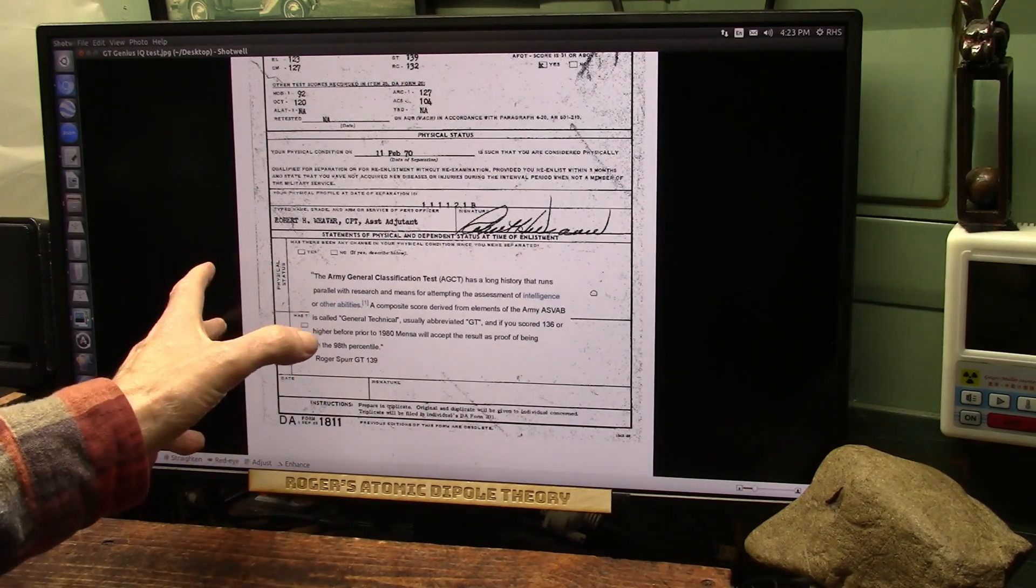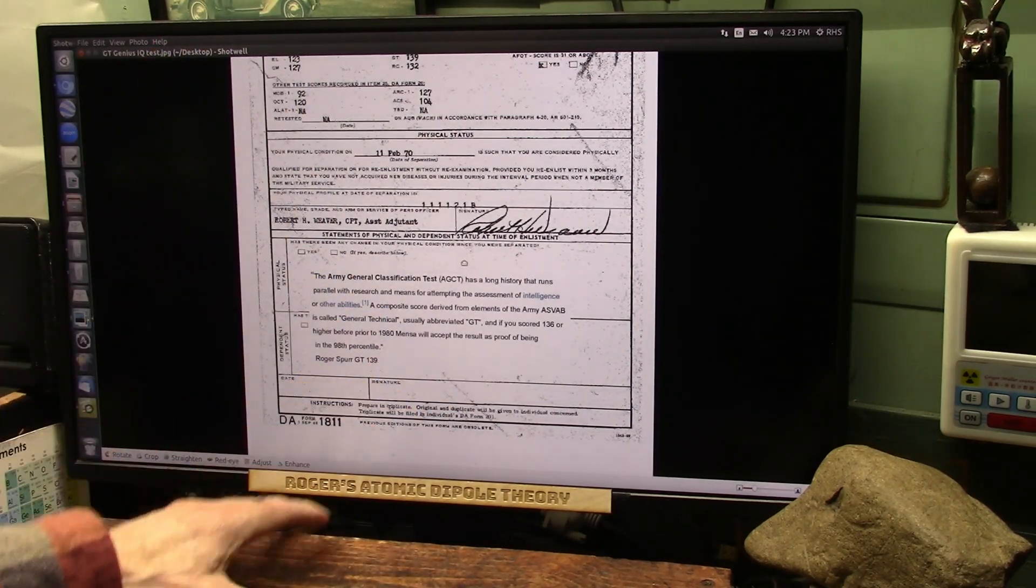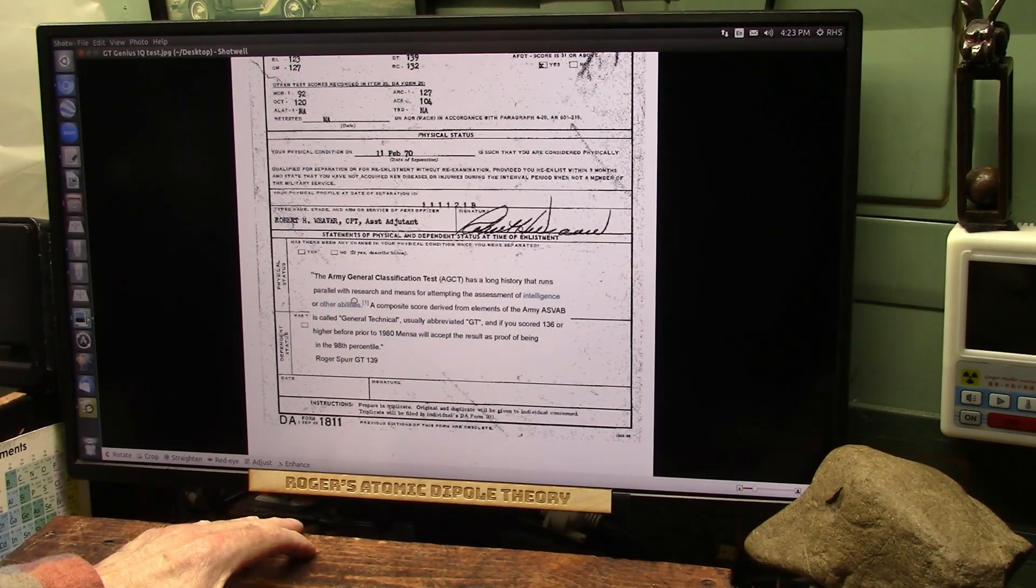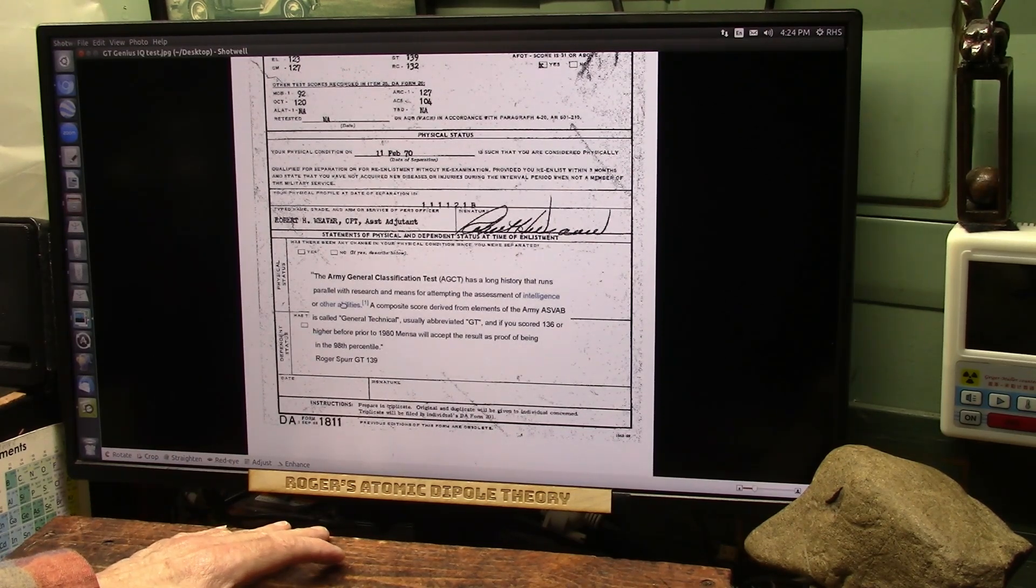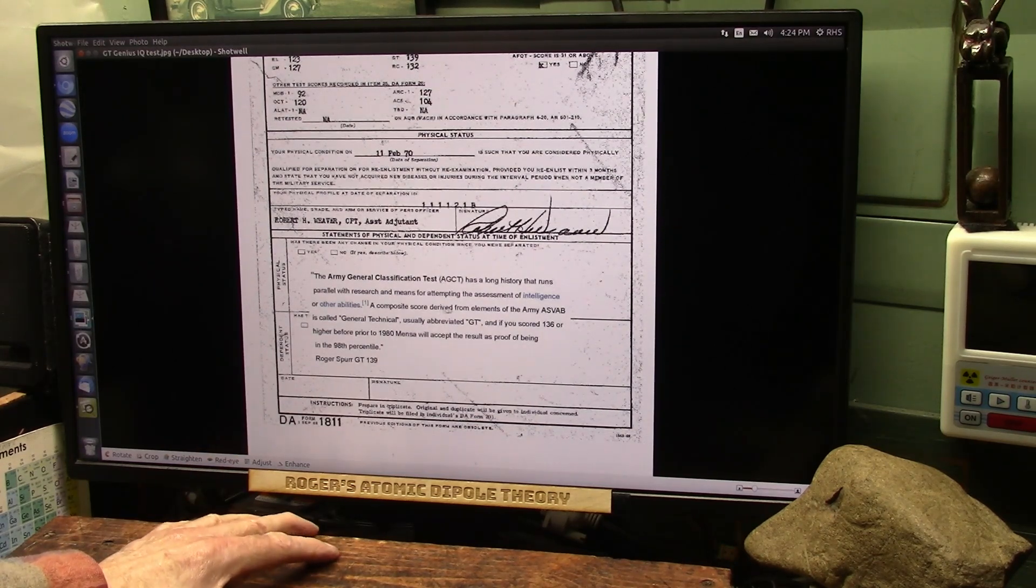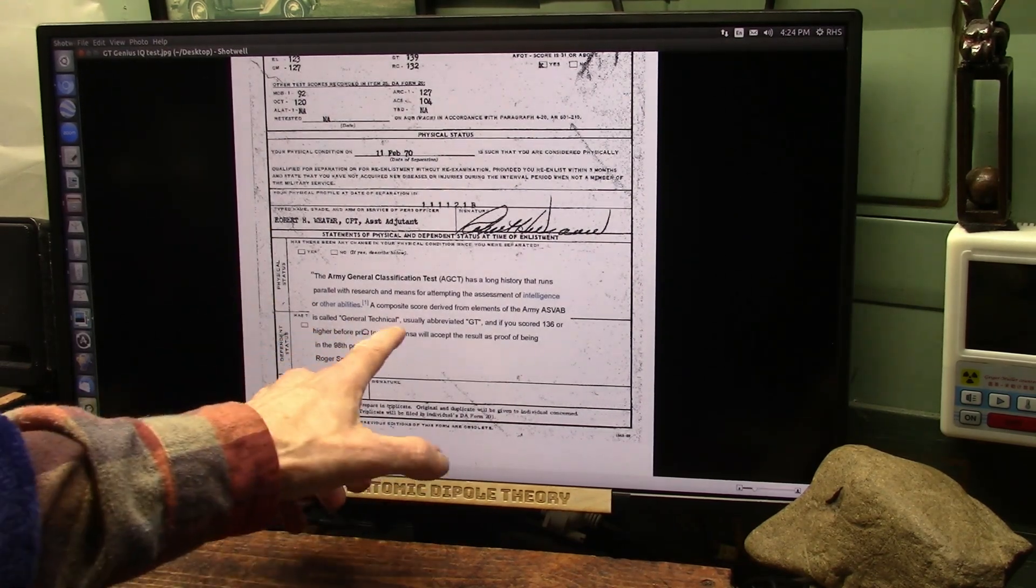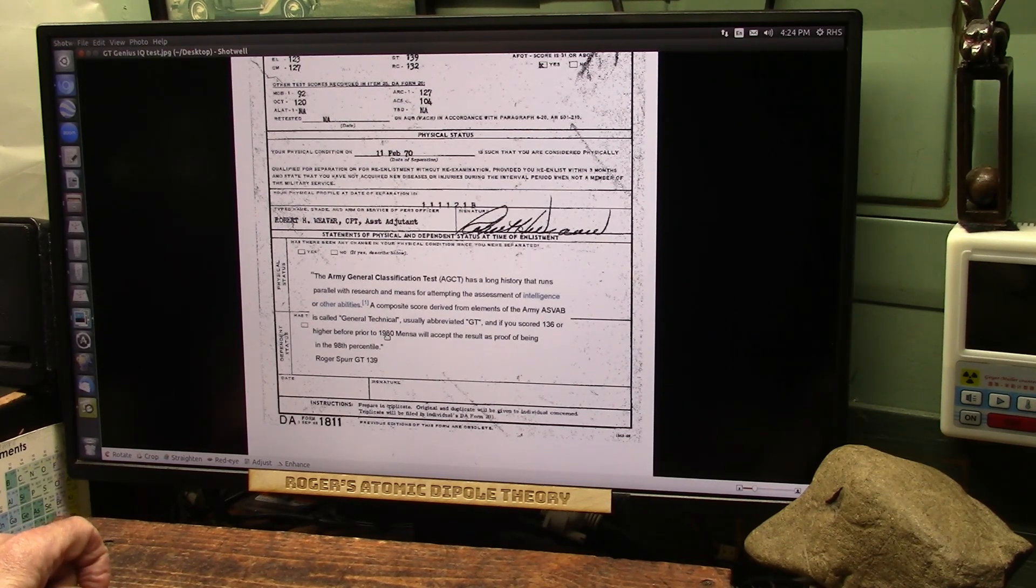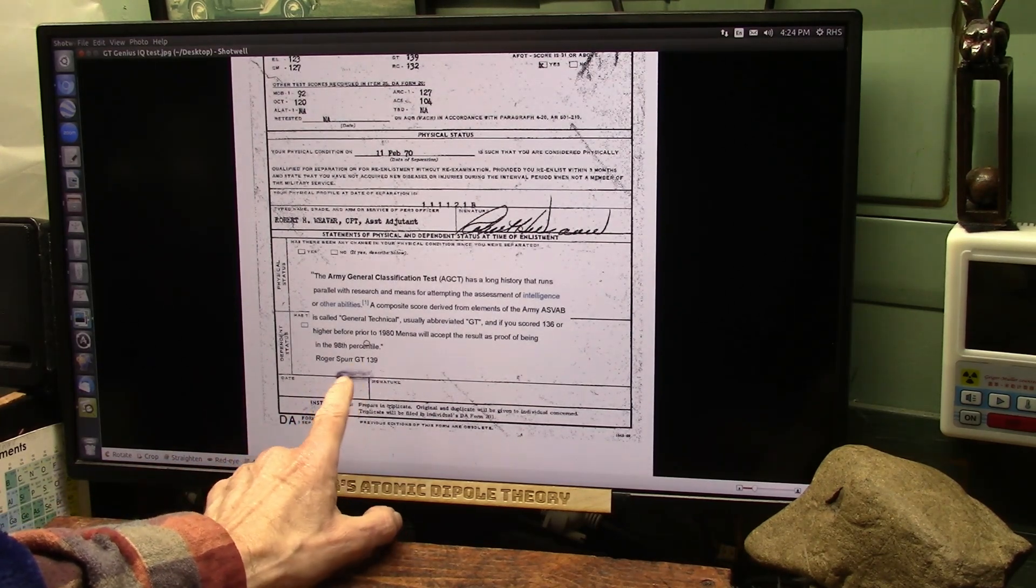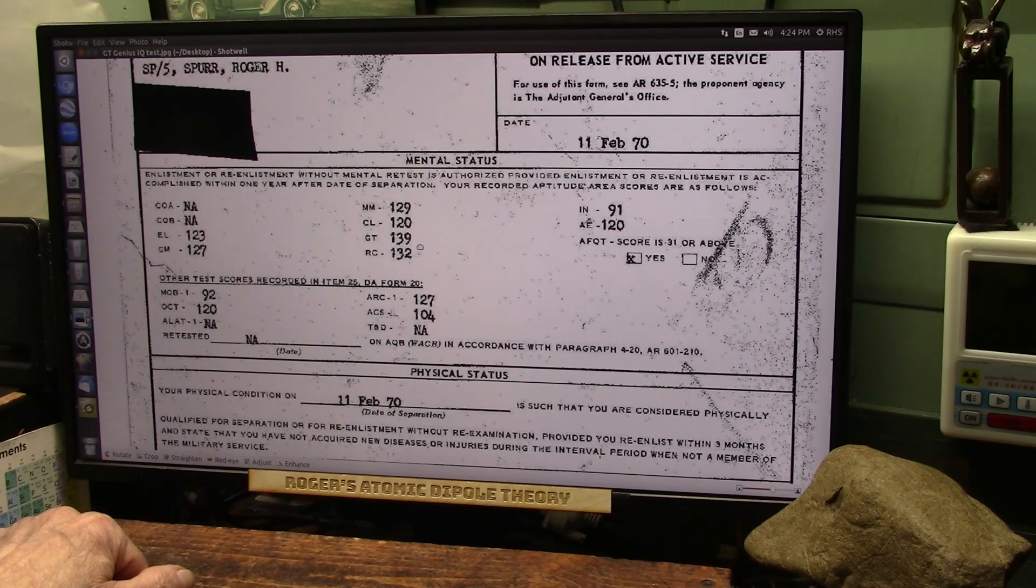this is what the GT means, Army, General, Classical, Tech. It's, what is it? It's general technical abilities. Has a long history, runs parallel with research, which I love, means for attempting the assessment of intelligence or other abilities. A composite score derived from elements of the Army, ASVAB, is called General Technical. That's the GT. If you scored 136 or higher before 1980, Mensa will accept the result as proof of being in the 98th percentile. Mine was 139. All right, so you do the math, I'm over 100.